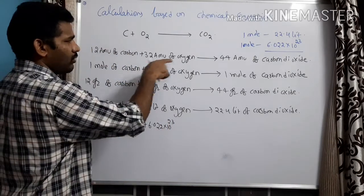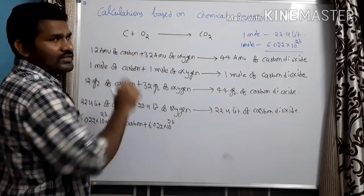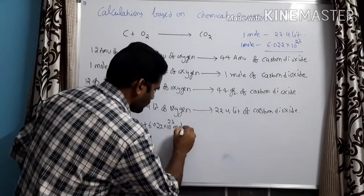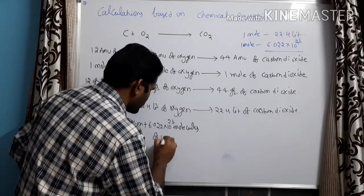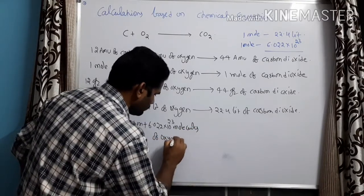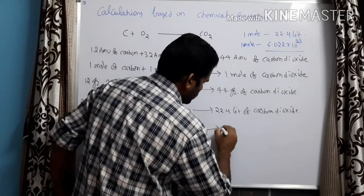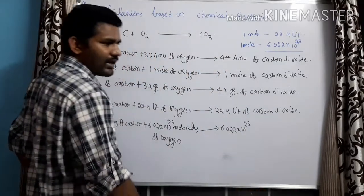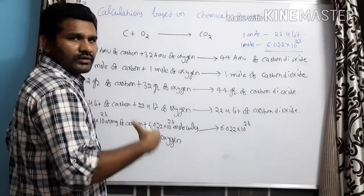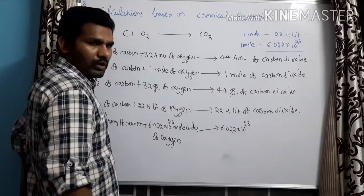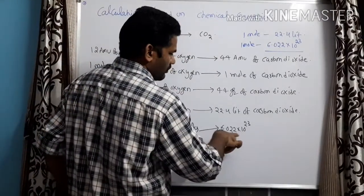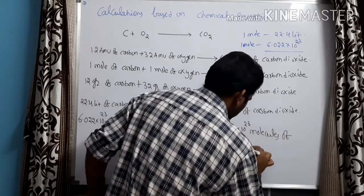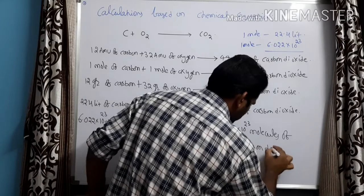Here I have to write molecules for oxygen — why? Because oxygen exists as a molecule. So 6.022 × 10²³ molecules of oxygen to form 6.022 × 10²³ molecules of carbon dioxide — definitely molecules, because carbon dioxide is also a molecule.